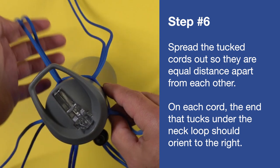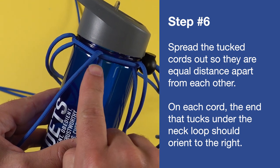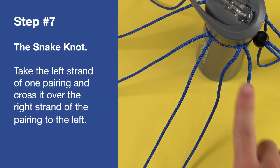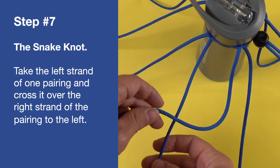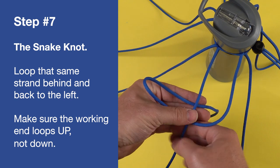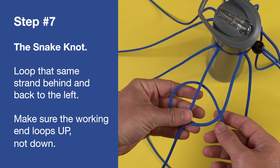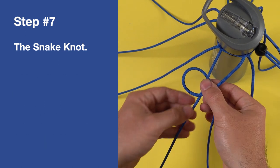Spread the tucked cords out so they are equal distance apart from each other. Now we're going to perform the snake knot. Take the left strand of one pairing and cross it over the right strand of the pairing to the left. Loop that same strand behind and back to the left. Make sure the working end loops up and not down.